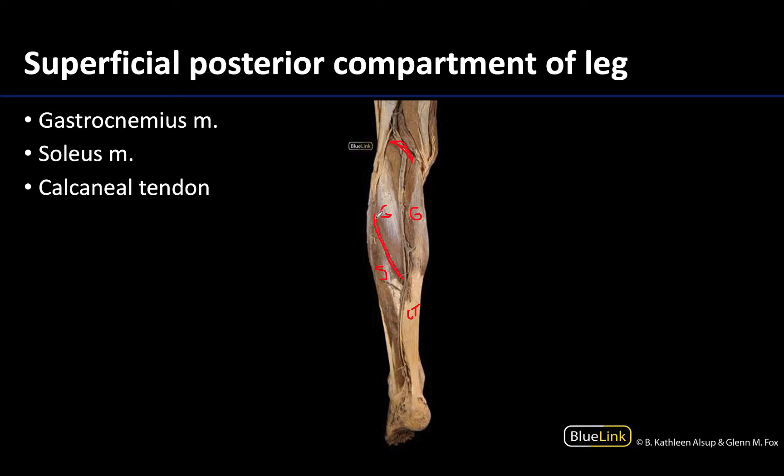I'm outlining the demarcation between the gastrocnemius and the soleus. The soleus is deeper and flatter, and even though it's deeper, it is so wide that you can actually see it peeking out from the more superficial gastrocnemius. Its proximal attachments are on the fibula and the tibia, so it does not cross the knee joint like the gastrocnemius does.